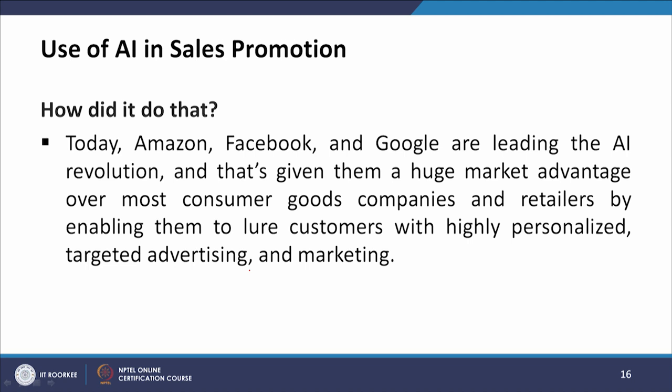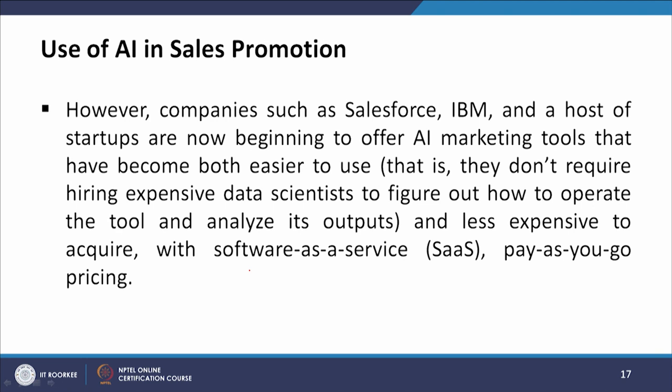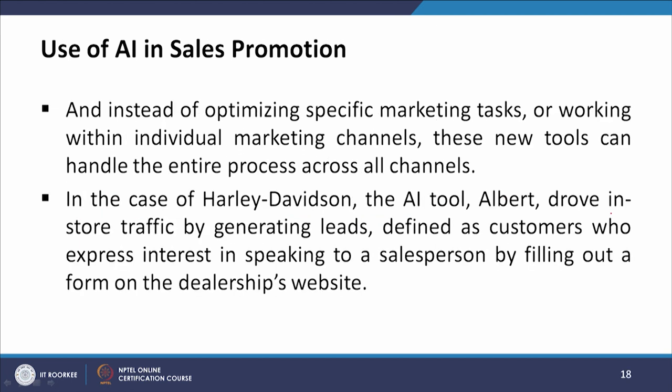Today, Amazon, Facebook and Google are leading the AI revolution, giving them a huge market advantage by enabling highly personalized targeted advertising and marketing. However, companies such as Salesforce, IBM, and a host of startups are now offering AI marketing tools that are easier to use — they do not require hiring expensive data scientists — and less expensive to acquire, with software-as-a-service pay-as-you-go pricing. Instead of optimizing specific tasks within individual channels, these new tools can handle the entire process across all channels.